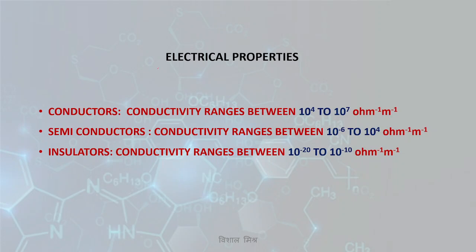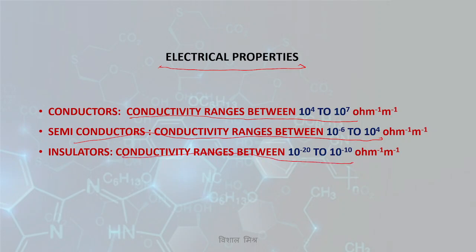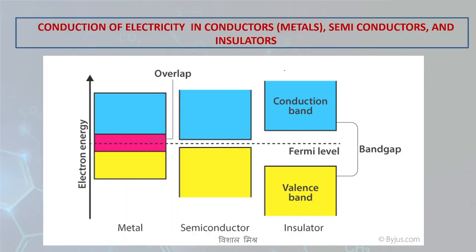Next are electrical properties. Conductors have a conductivity range of 10⁴ to 10⁷ ohm⁻¹m⁻¹. Semiconductors have a conductivity range of 10⁻⁶ to 10⁴ ohm⁻¹m⁻¹. Insulators have a conductivity range of 10⁻²² to 10⁻¹⁰ ohm⁻¹m⁻¹. This is explained using band theory.